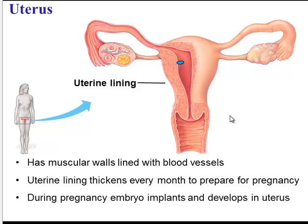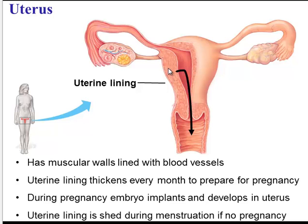If she does get pregnant, then the embryo will implant in that thick uterine wall. If, however, she does not get pregnant, then the female will shed that thick uterine lining during menstruation. So that's actually what is being passed out of the female's body.